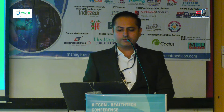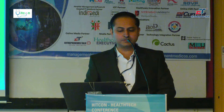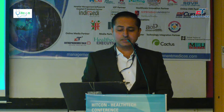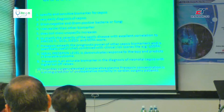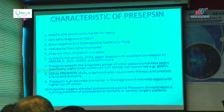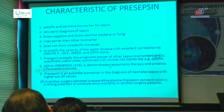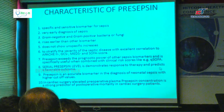From this mechanism, we come to know that with presepsin we can early diagnose sepsis. It is a more sensitive and specific biomarker in sepsis. It can detect bacteria and also fungus. It rises earlier than other biomarkers. It does not show non-specific increases — no false positive results. If you stratify the severity of septic disease, there is an excellent correlation with Apache score and SOFA score. Its prognostication power, when combined with clinical scores, is very high. Serial presepsin levels also demonstrate response to therapy and predict favorable outcome.